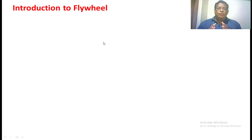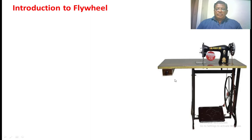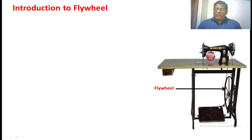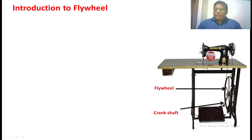A flywheel is a disc which rotates on its own axis and can store energy in the form of kinetic energy. A simple example is a manual sewing machine — this main wheel is nothing but a flywheel. The pedal is connected to the center of the main wheel through a crankshaft, which converts oscillatory motion into rotating motion.